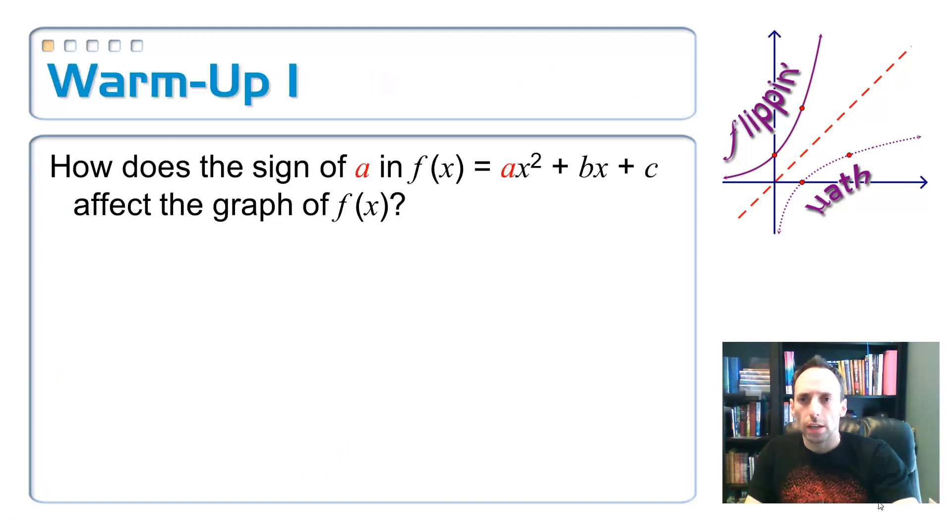Let's look at a couple of warm-up activities first. How does the sign of a, in f(x) equals ax squared plus bx plus c, so just a quadratic function, how does that affect the graph? Well, remember, a does a couple of things. First of all, it makes it fatter or skinnier. And it also flips it upside down and turns it into a beard or a mustache. So take a look at that first one, that first one is a beard.